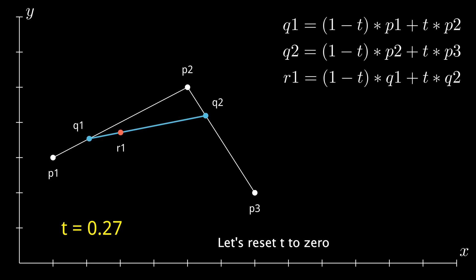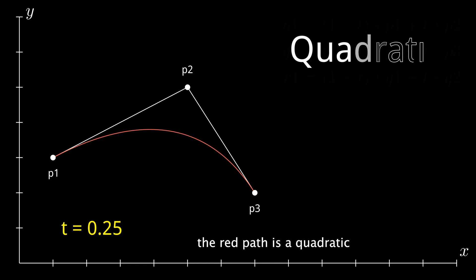Let's reset T to 0 and keep our eyes on the red R1 as it moves. You see the path that it takes? If we get rid of every unnecessary thing on the screen, the red path is a quadratic or a second-order Bezier curve.